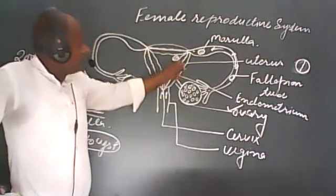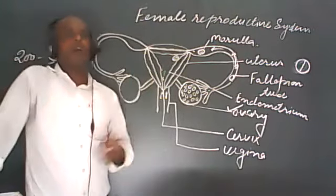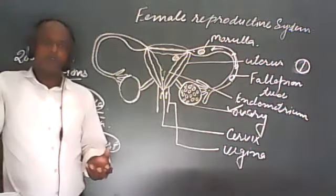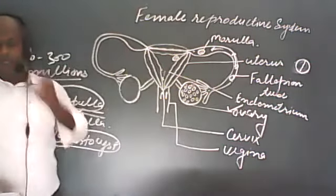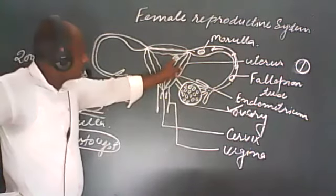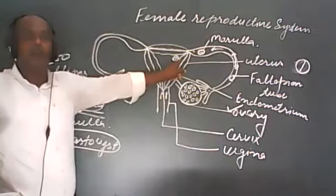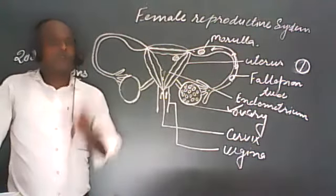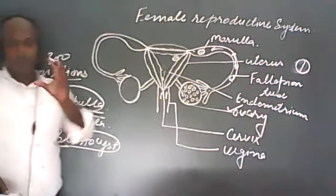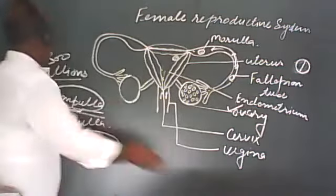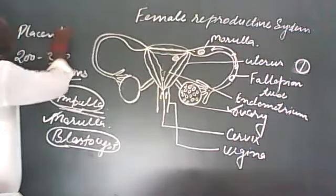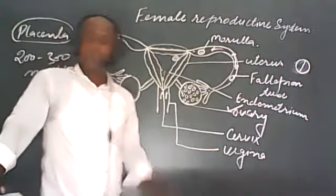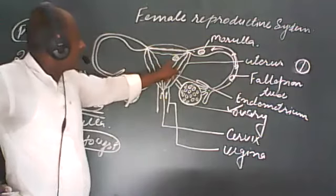The villi are helpful for the implantation of the blastocyst with the uterine wall. After the blastocyst has implanted with the uterine wall, the contact region where the blastocyst comes in contact with the uterine wall starts to grow to form a special spongy disc-like structure called the placenta.